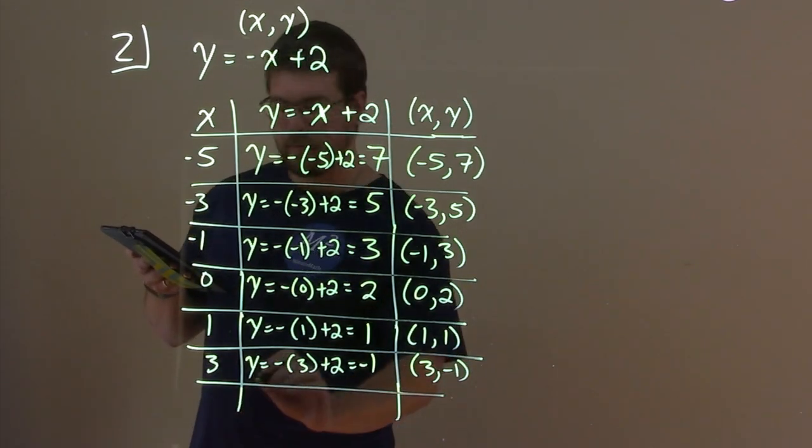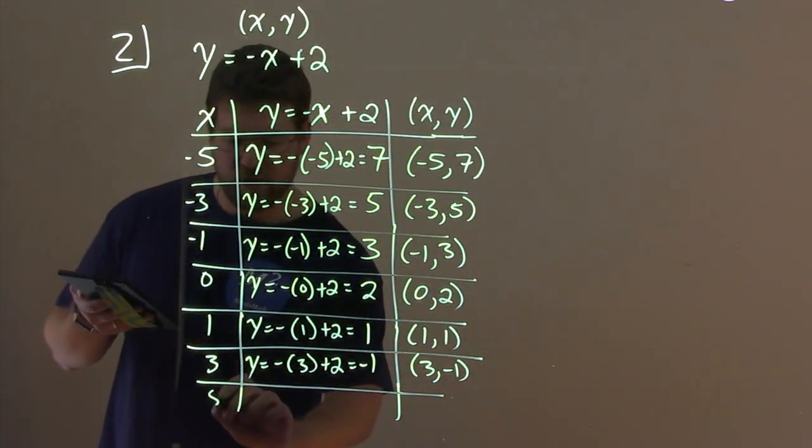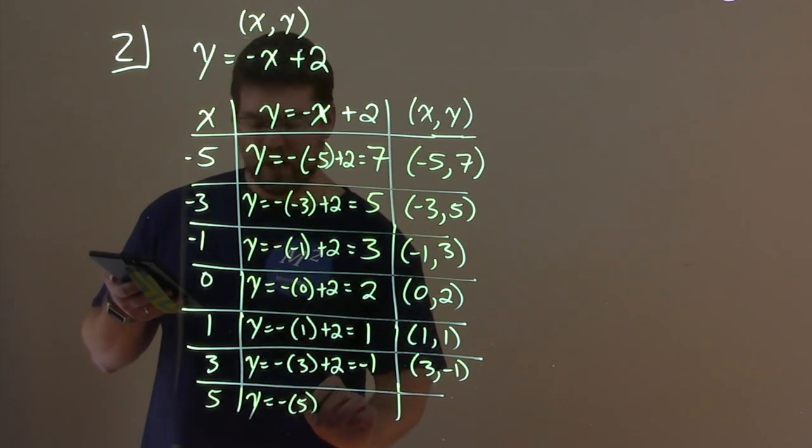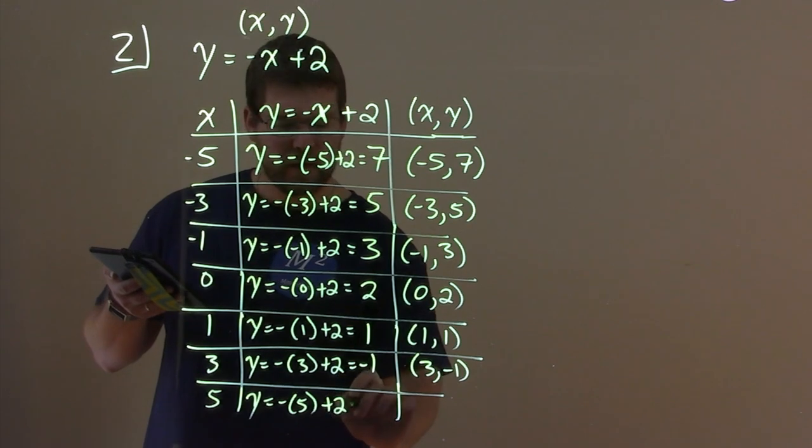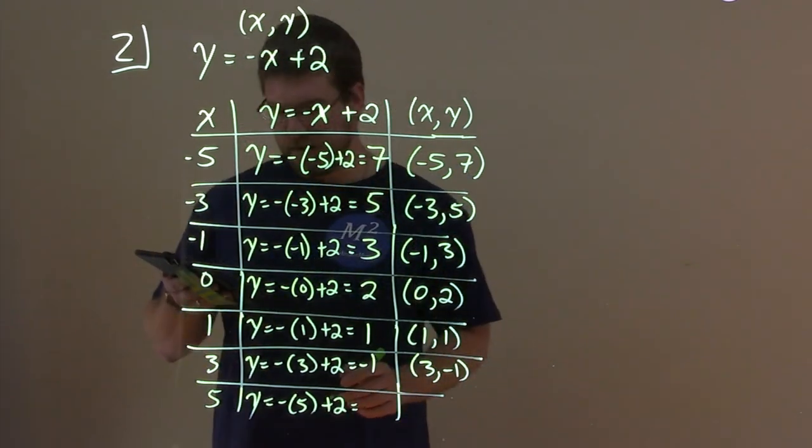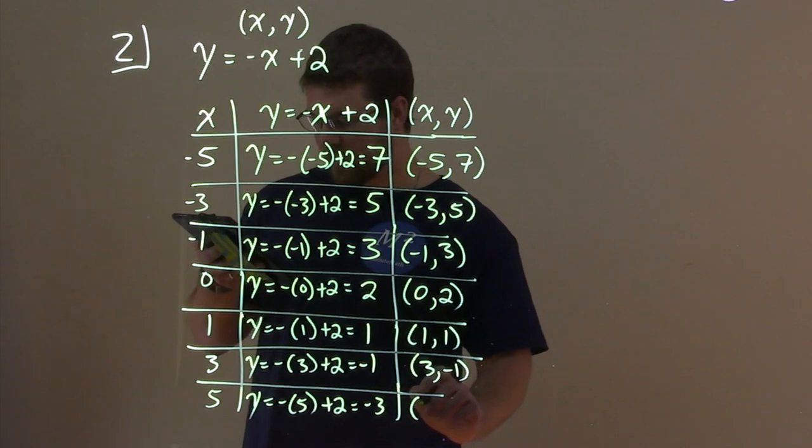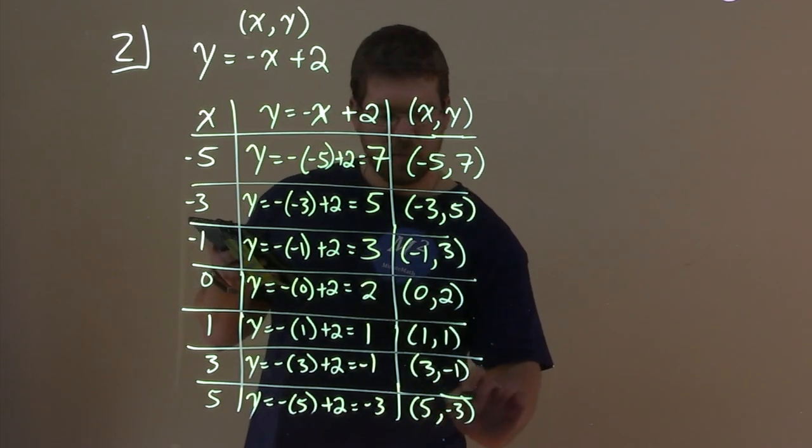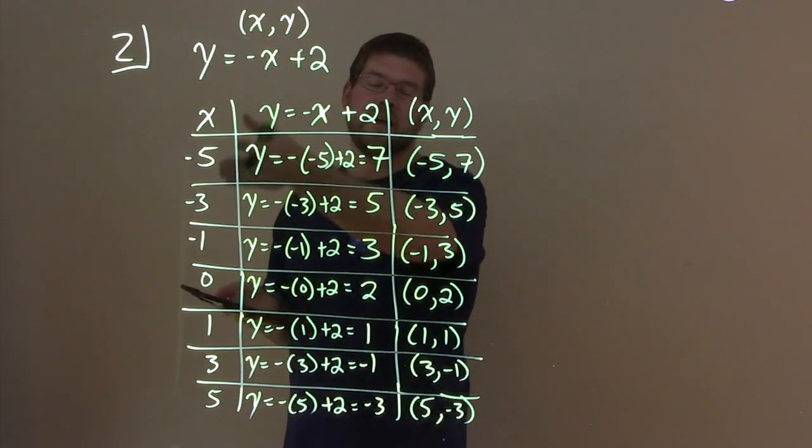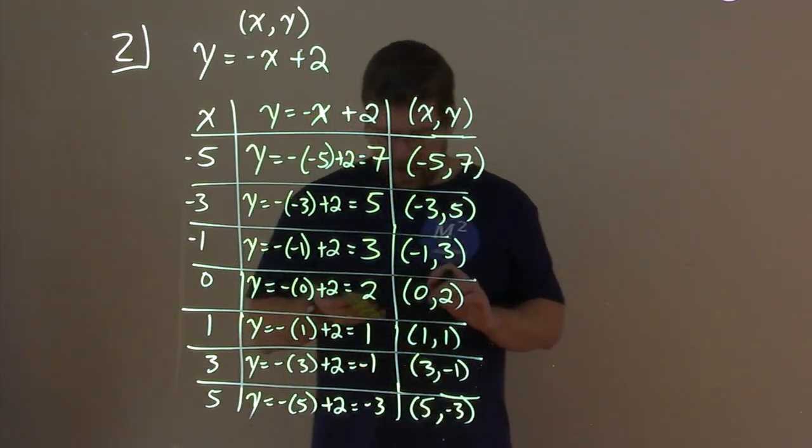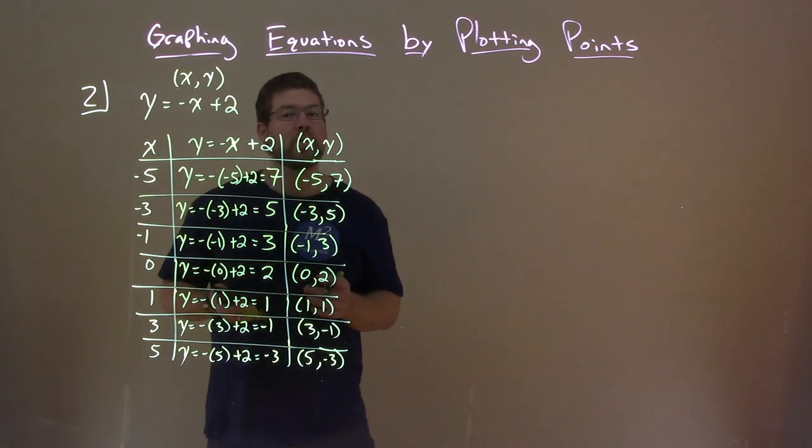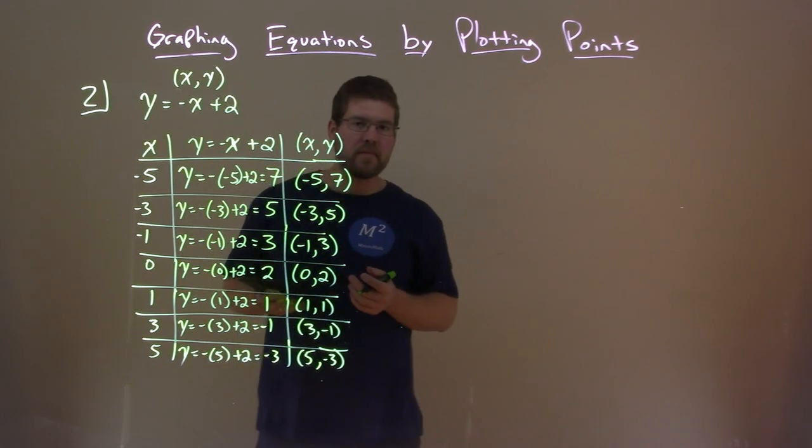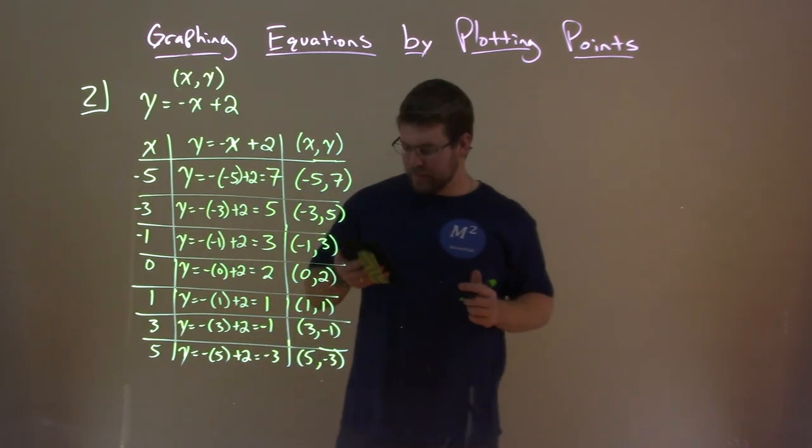And lastly, we have 5. y equals negative 5 plus 2. Negative 5 plus 2 is negative 3. Our last coordinate point is 5 comma negative 3. It's important to note you can pick any x values you want. I just had these set up ahead of time. Now we're going to graph these coordinate points and connect the dots. Bear with me, I'm going to create a graph.